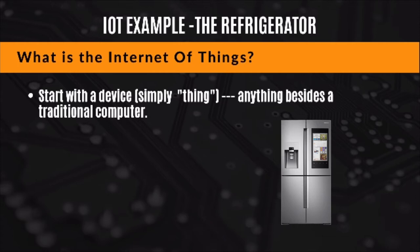Let's break down the term Internet of Things. We start off with a thing of some kind. In this case we're talking about a refrigerator, and a refrigerator is just a thing — it can be anything besides a computer. If it's a computer, we're not calling that a thing. Anything besides a traditional computer — a laptop, desktop, server type of device — we'll call that a thing. And it has some features and some use. In the case of a refrigerator, we know what it does: it keeps things cold.